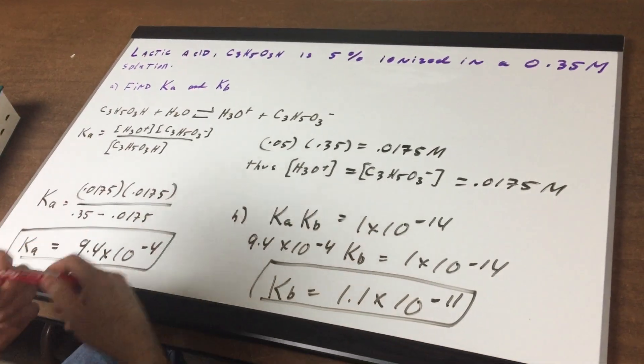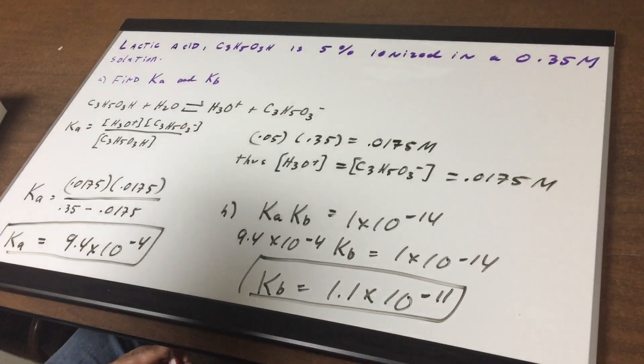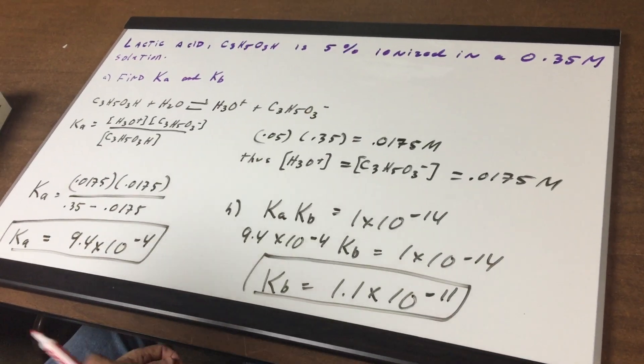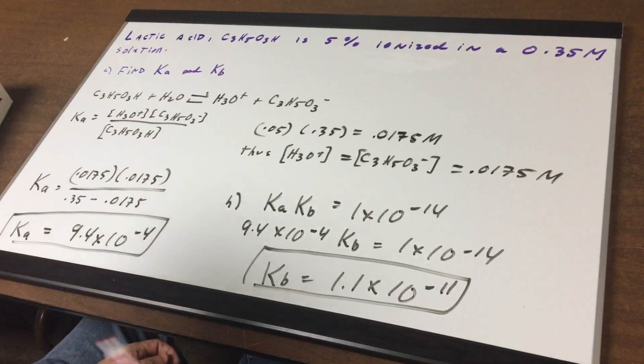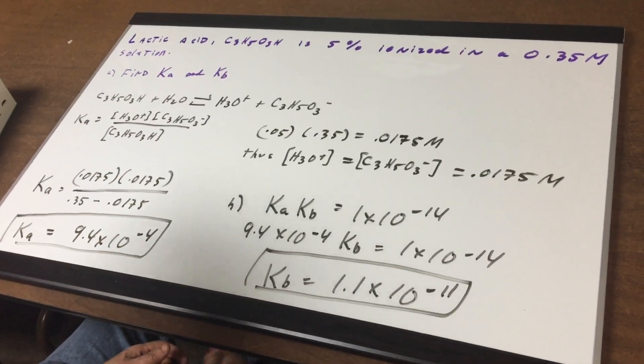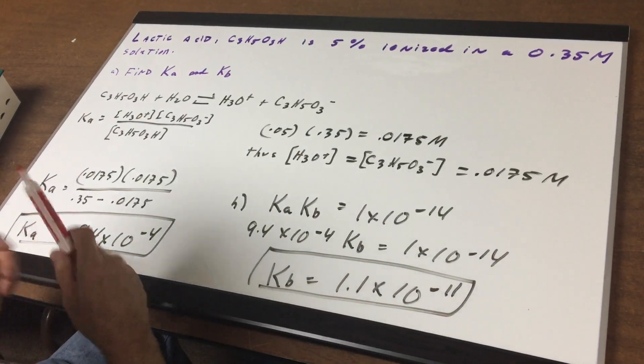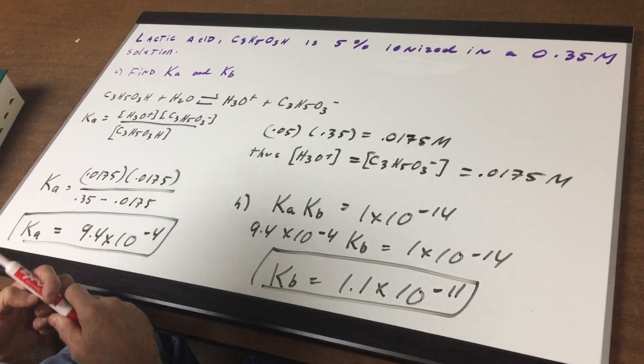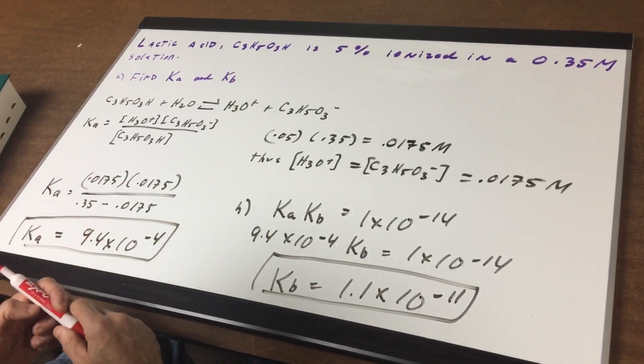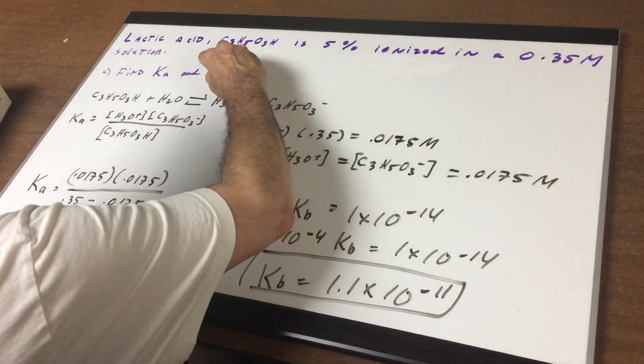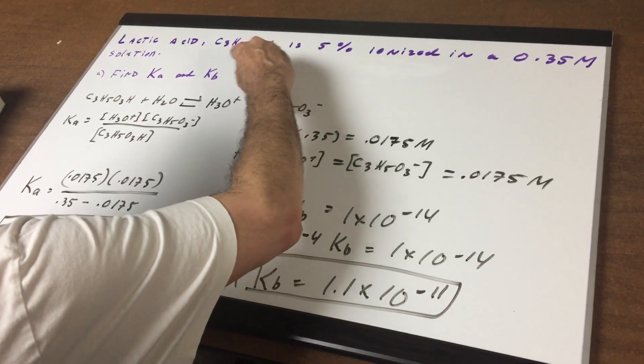I gave you lactic acid. If you remember lactic acid we see that in muscle fatigue, it's produced in the body and it goes to the liver and is reconverted back into glucose via gluconeogenesis. At any rate this lactic acid C3H5OH3, notice in organic chemistry we were writing it as C3H6O3.